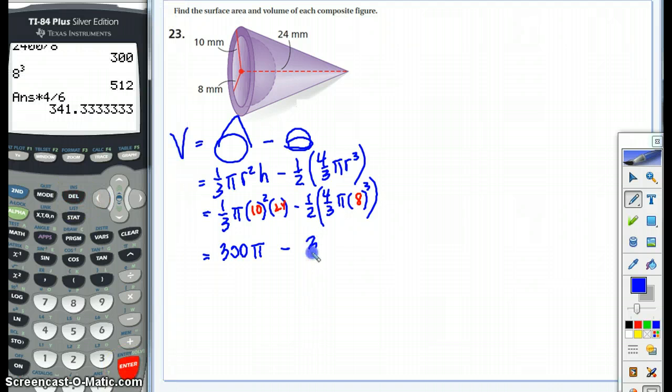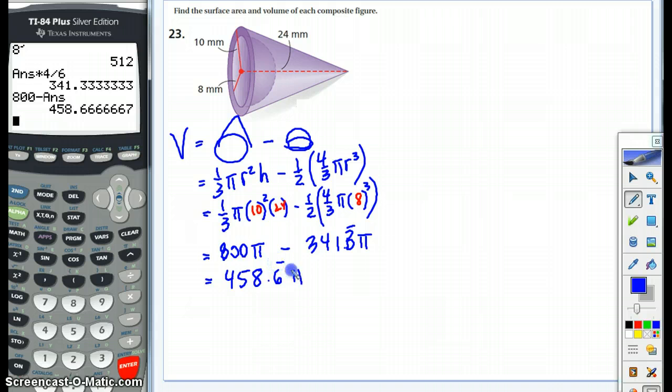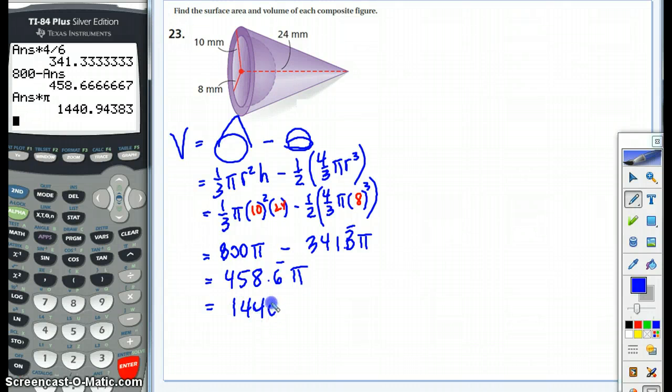So we get 341.3333 pi. So we're going to take... Something went wrong. I've just realized here, I put the wrong thing. It's supposed to be 800, not 300. So this makes more sense that we're going to be doing 800 minus the previous answer. And that's going to give us 458.6 pi. And let's go multiply that out. You'll notice that I haven't rounded anything off from my calculations yet. And I get 1440.9. And my units are millimeters cubed. So that's my volume.